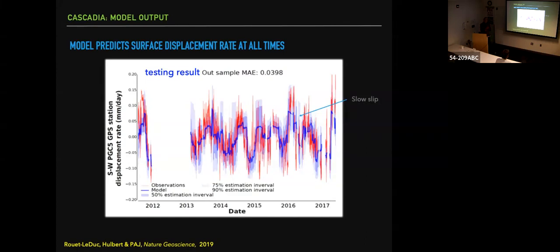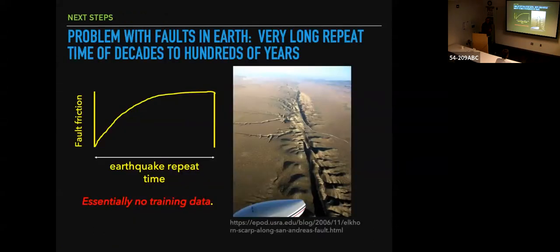A lot of additional work has gone on on this problem, especially by Claudia Aubert and Bertrand Roy-Leduc. We're going to continue stepping towards seismogenic faults. The repeat time for friction on earthquakes is very long on a human time scale — roughly 30 to even a thousand years — so we don't have any training data sets except for small earthquakes. We have small repeater earthquakes, and we're going to turn to those in a moment. We have essentially no training data for larger events.